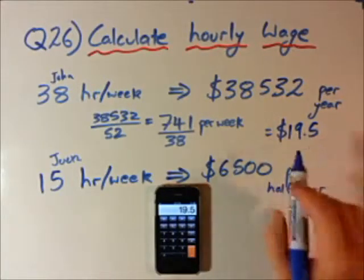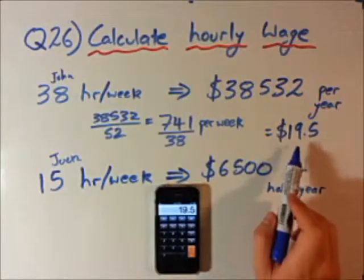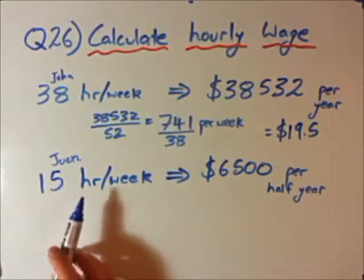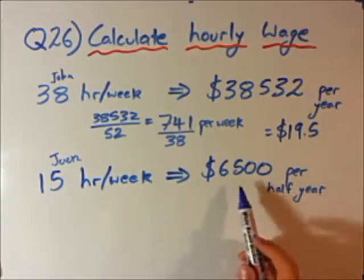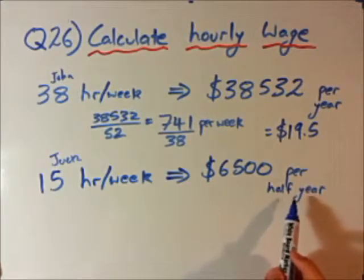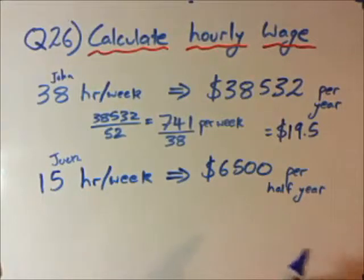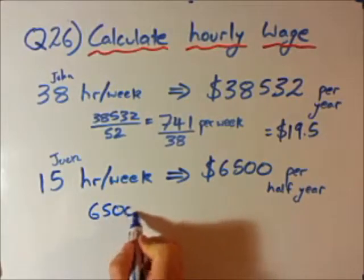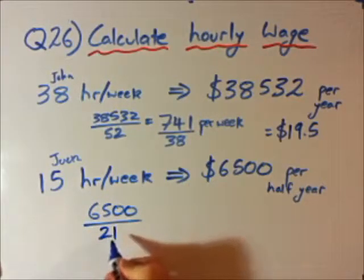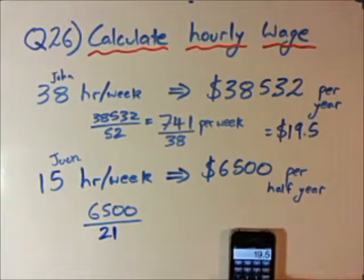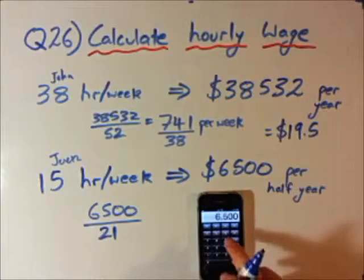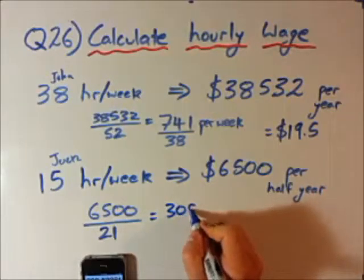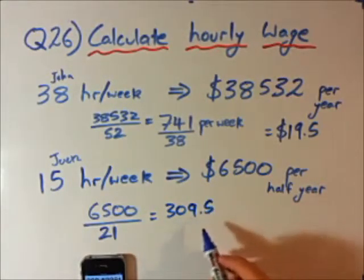John's hourly wage is $19.50 per hour. Now for the second example: Jack works 15 hours per week and brings home $6,500 per half year. To find his weekly wage, we divide $6,500 by the number of weeks he works — which I'll calculate next.